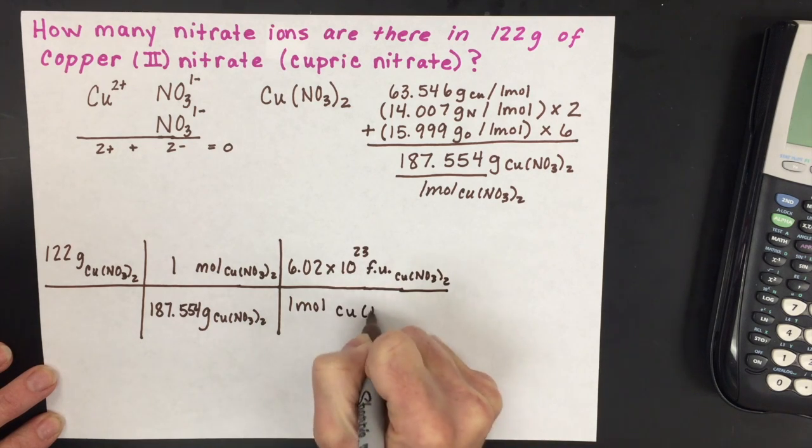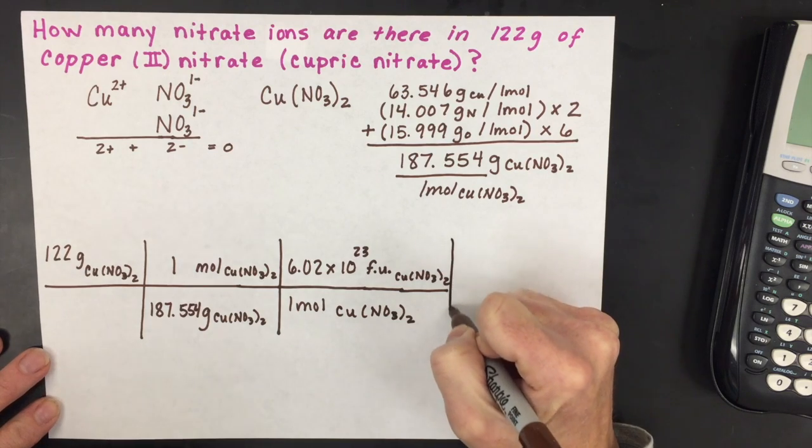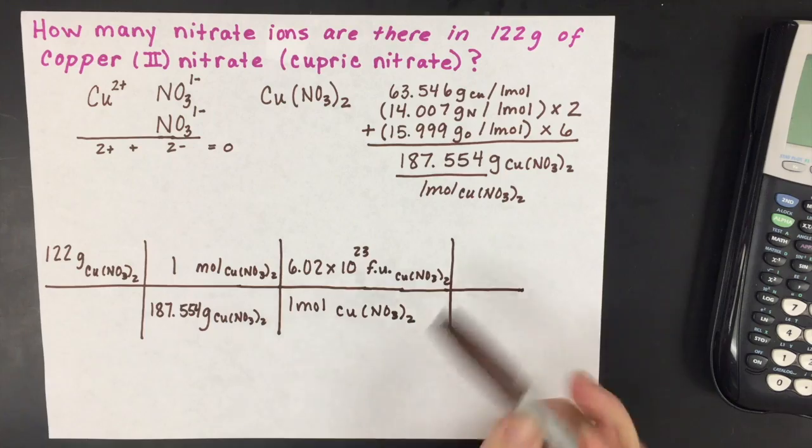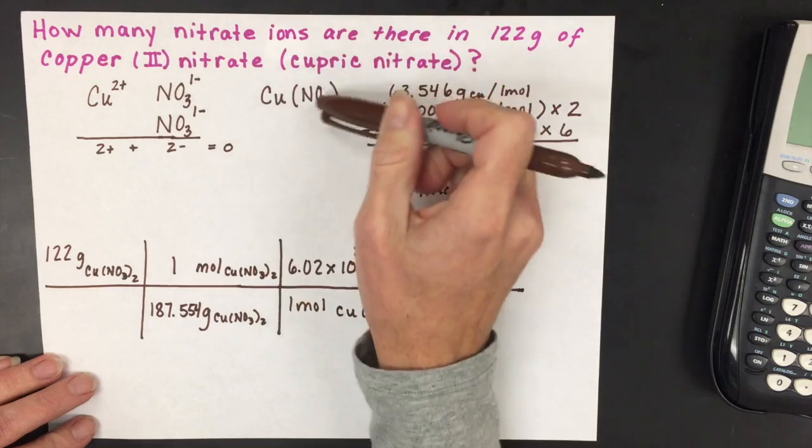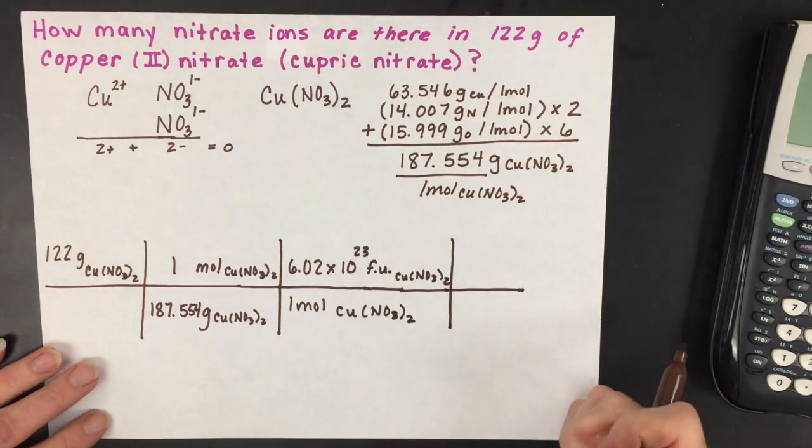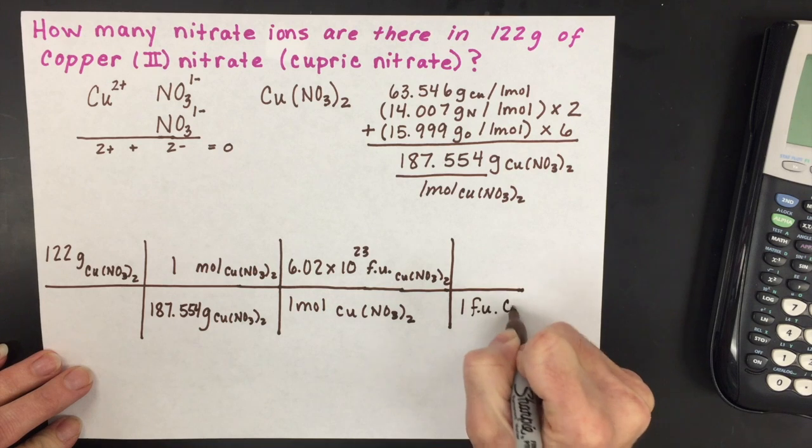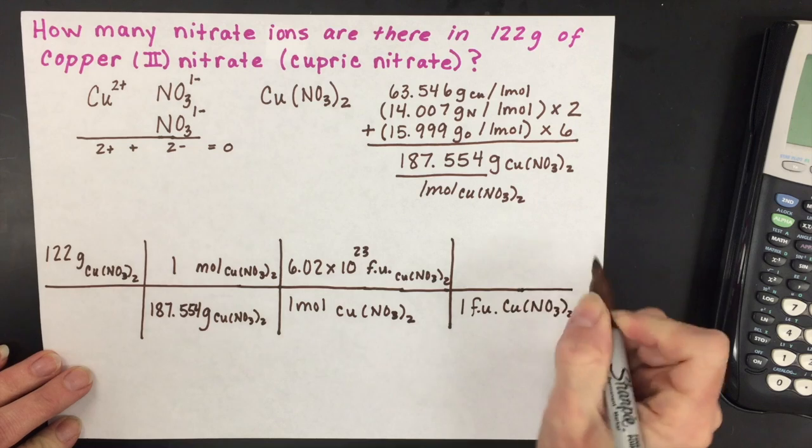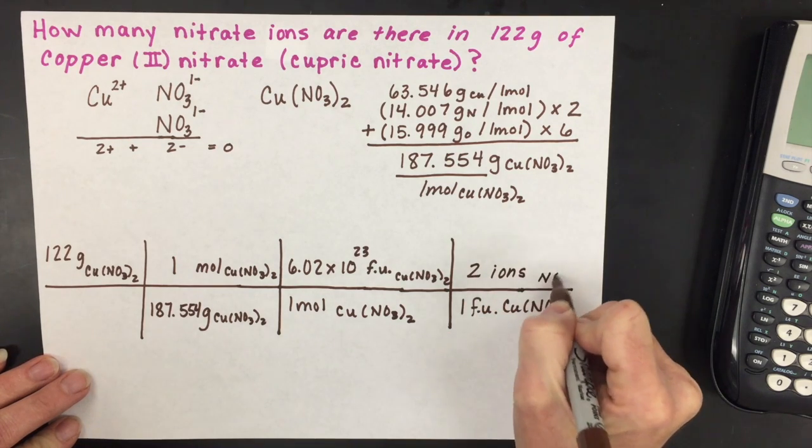We have one more conversion with this problem. This is what makes it a little extra difficult—we have to look at how many nitrates there are for every copper (II) nitrate compound. For every one formula unit of copper (II) nitrate, we have two nitrate ions.